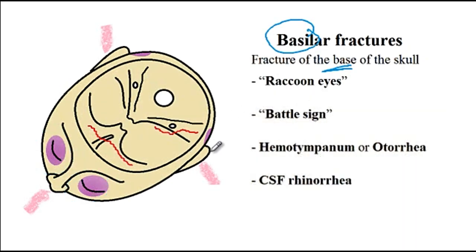The other sign is the battle sign, where there would be post auricular ecchymosis. In addition, the patient can have otorrhea, where there would be cerebrospinal fluid that is coming off of the ears, or there could be hemotympanum, where there is blood that is in the tympanic cavity. And then finally,